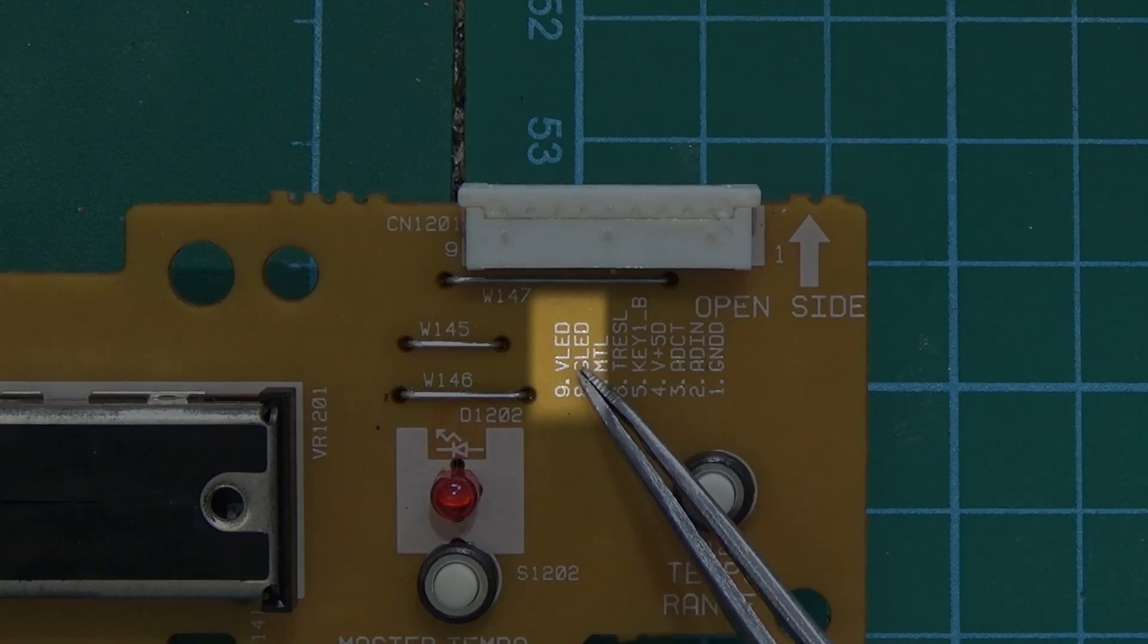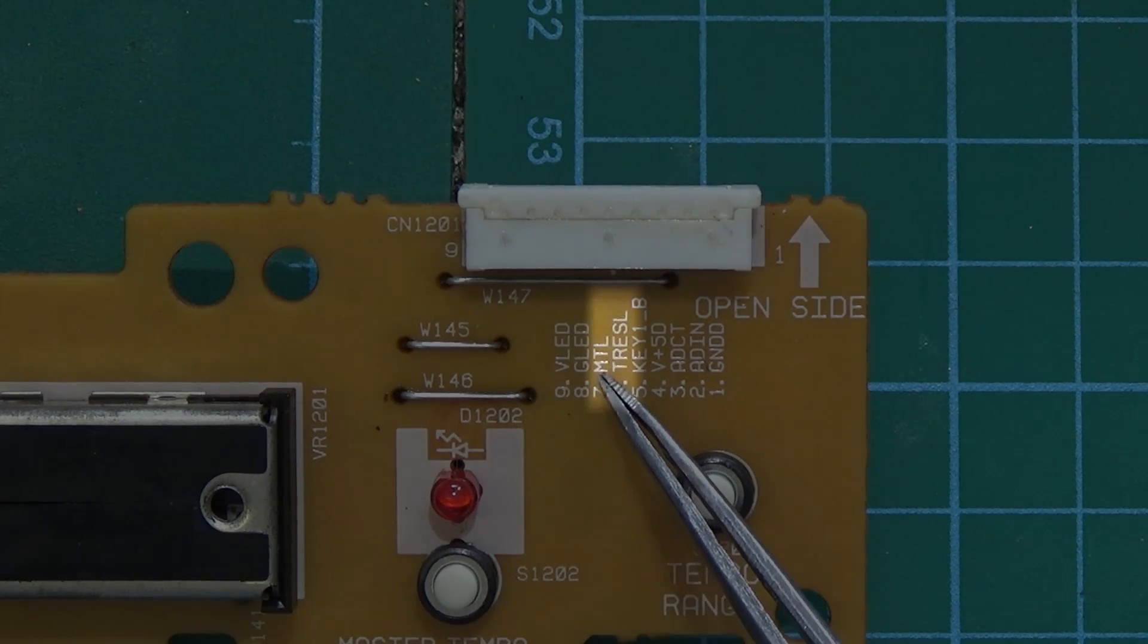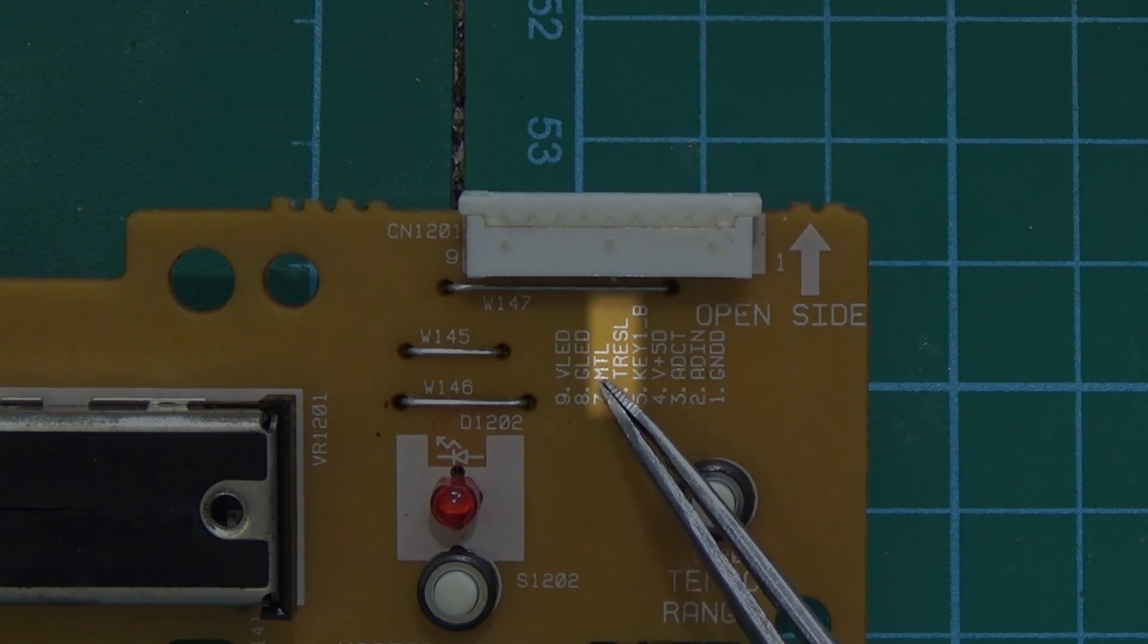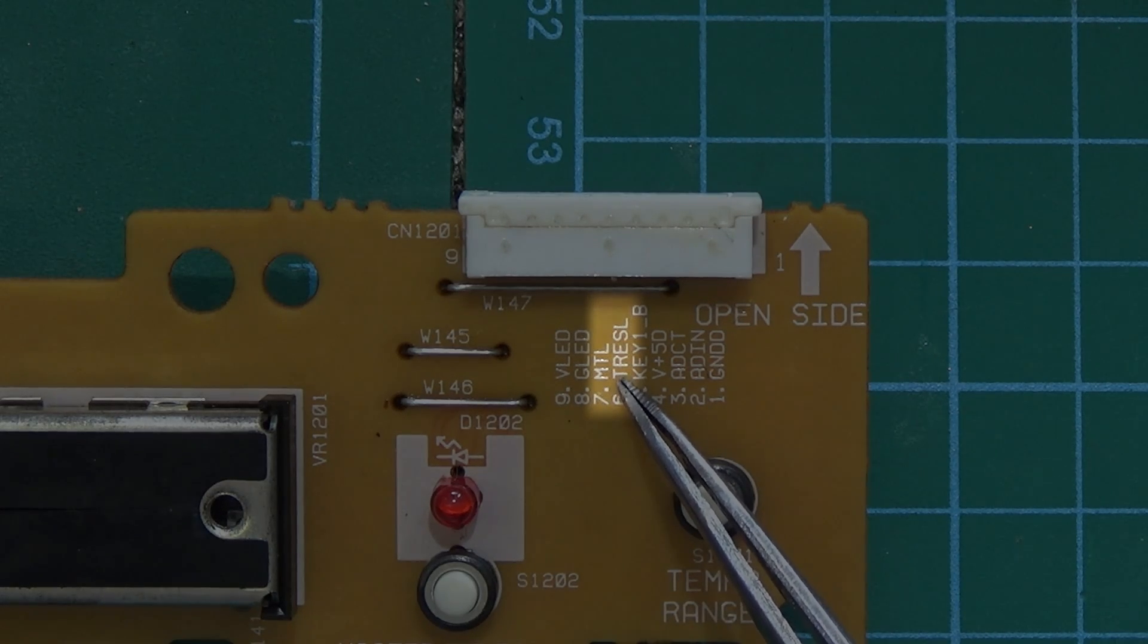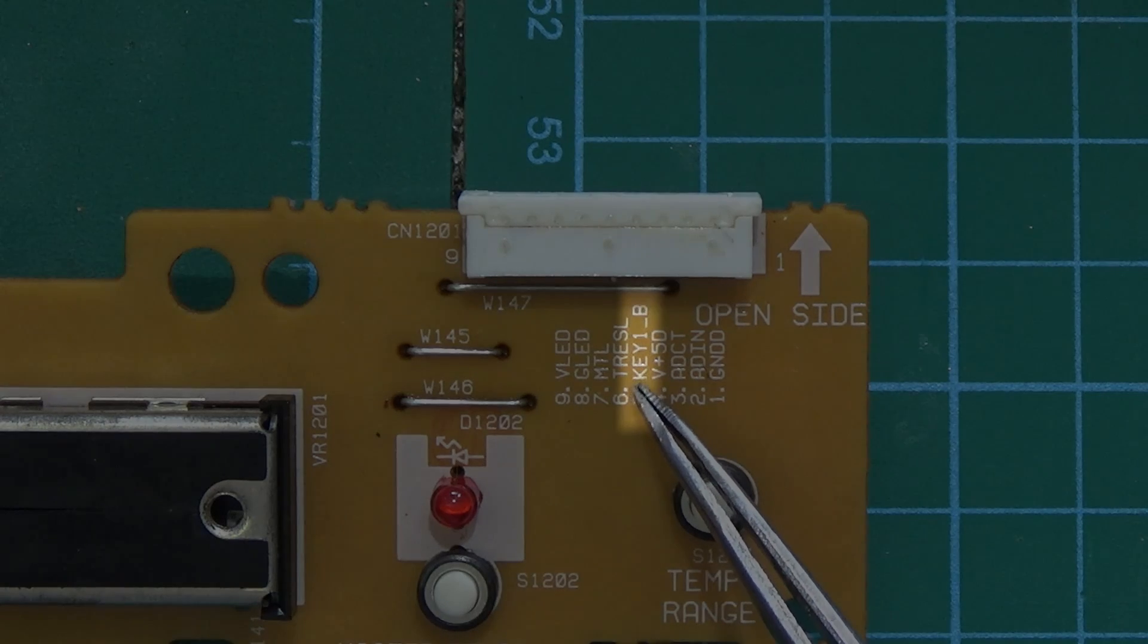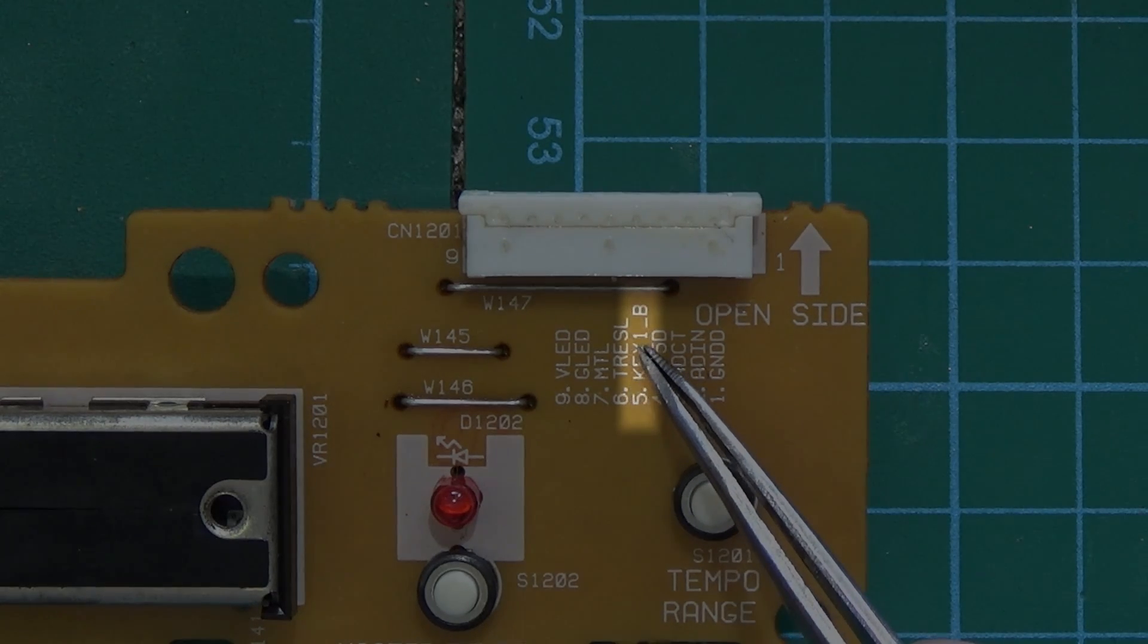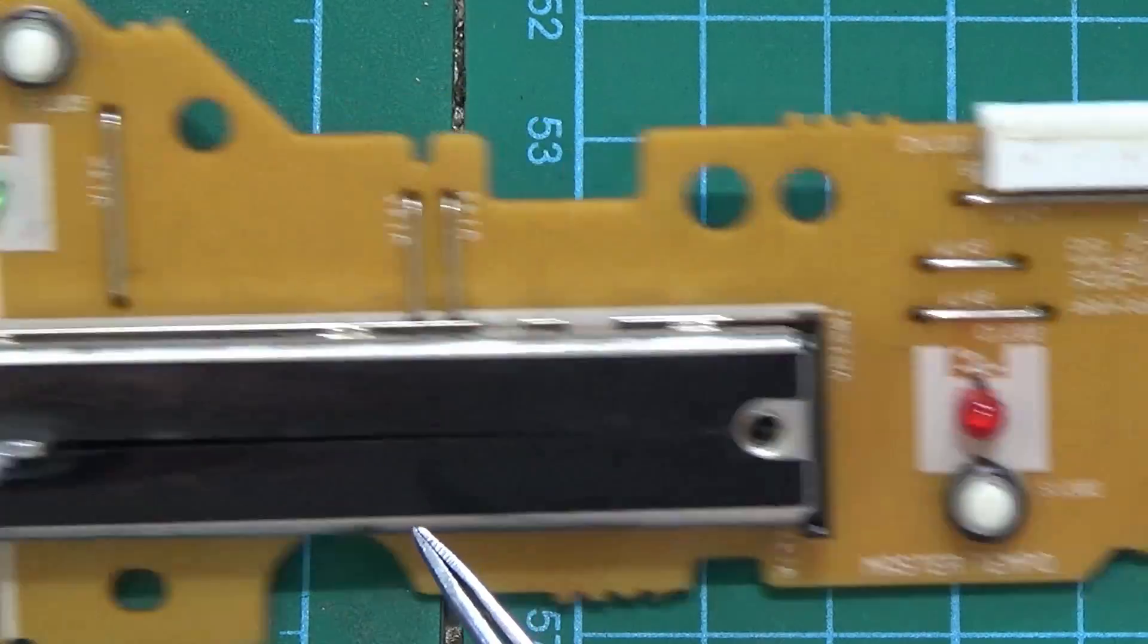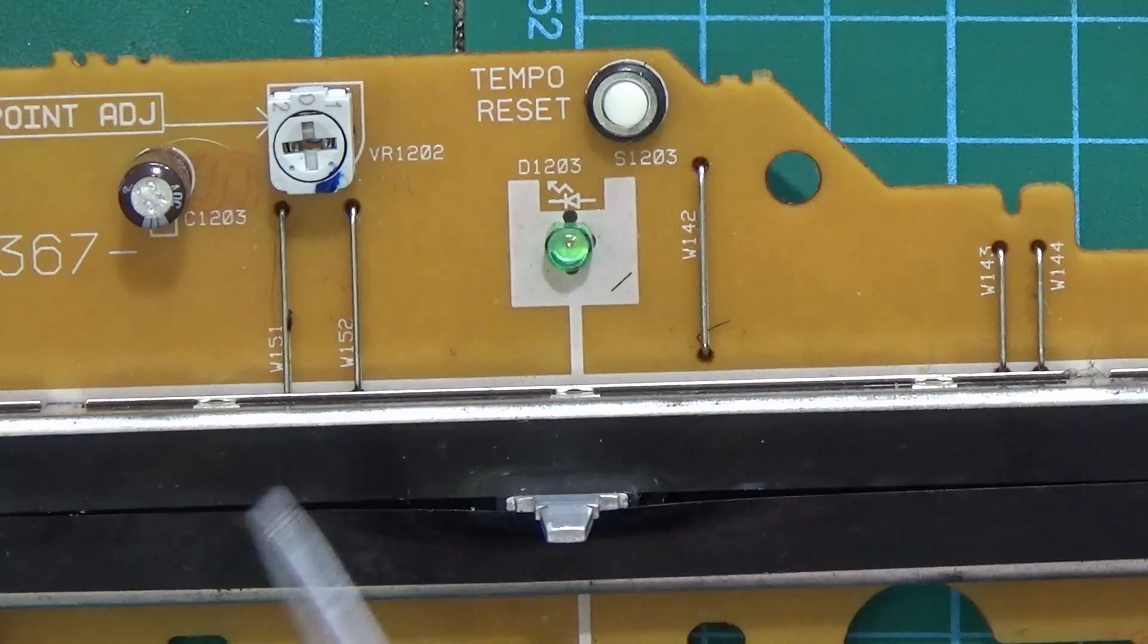Next we have MTL and TR ESL, which are the LEDs for the master tempo. Next we have KEY Y1_B, which is the button array for tempo range, master tempo, and tempo reset.